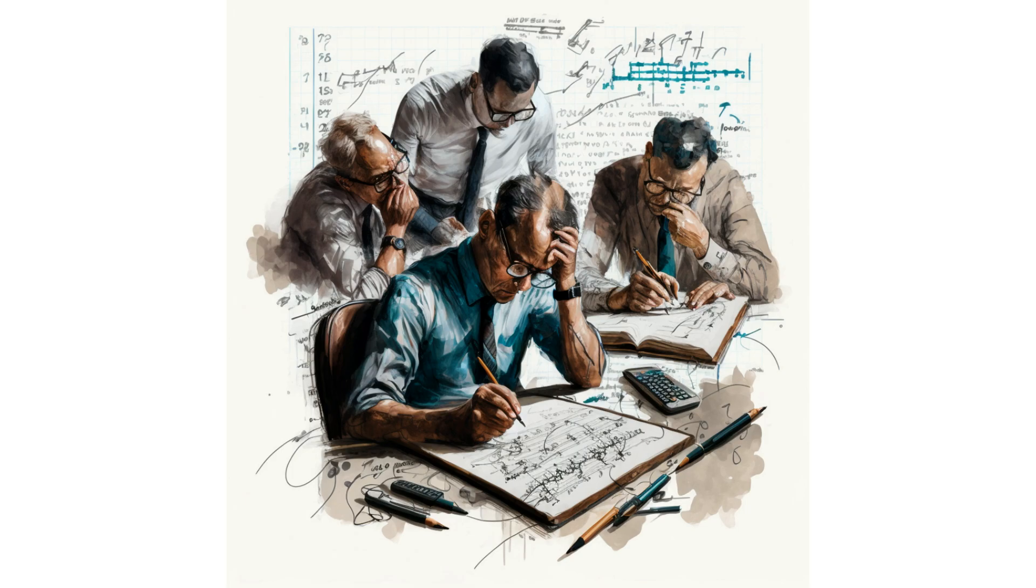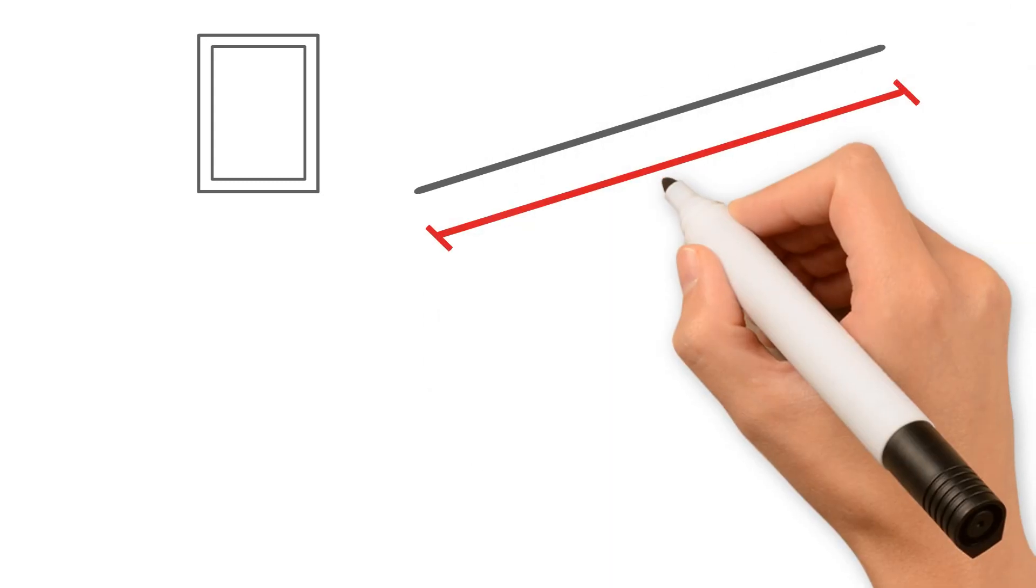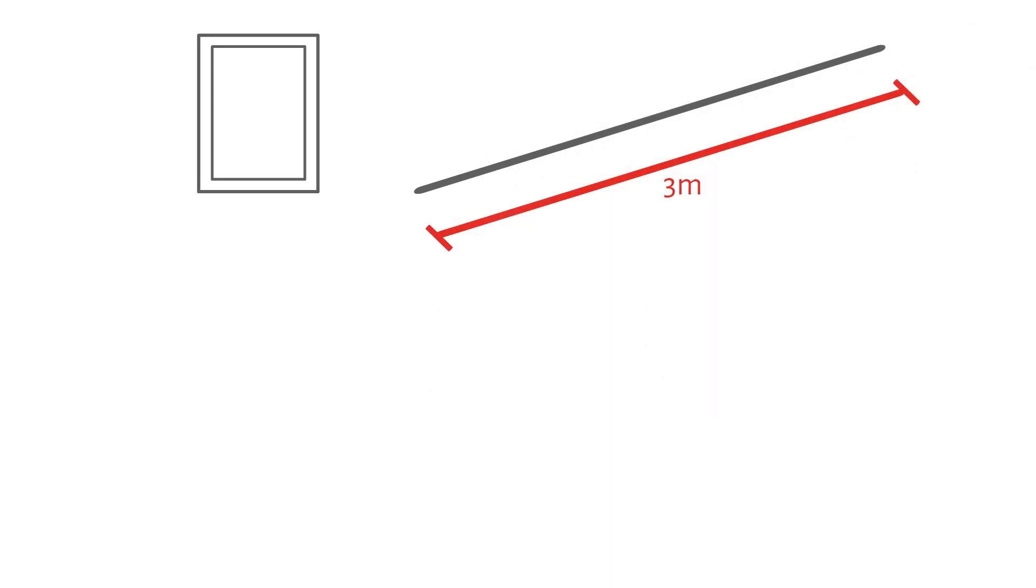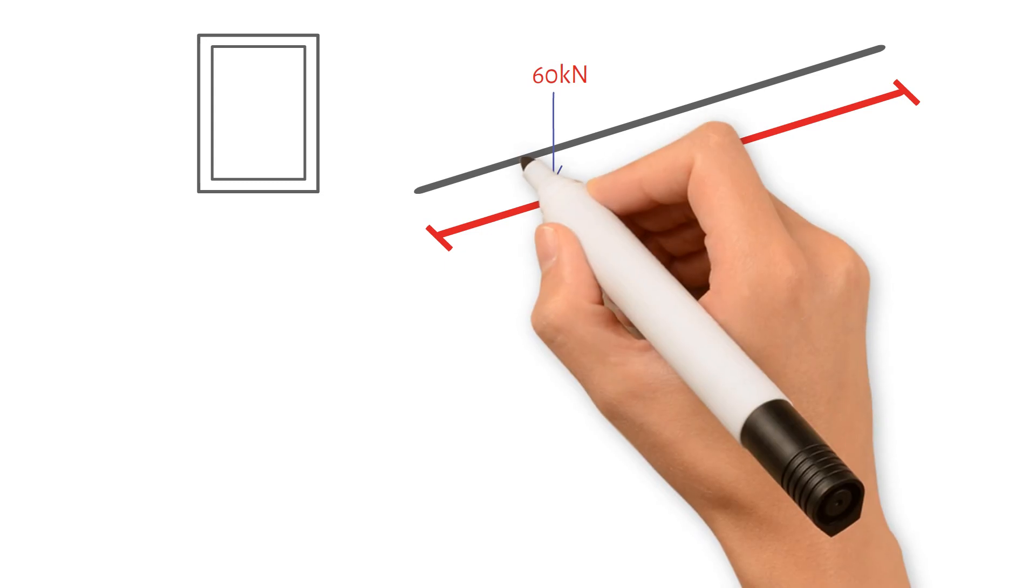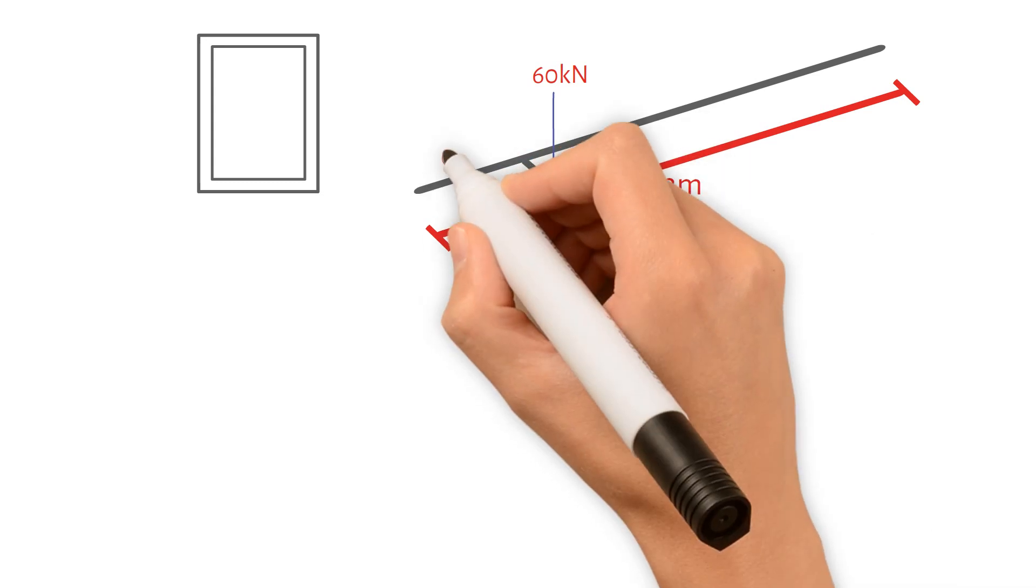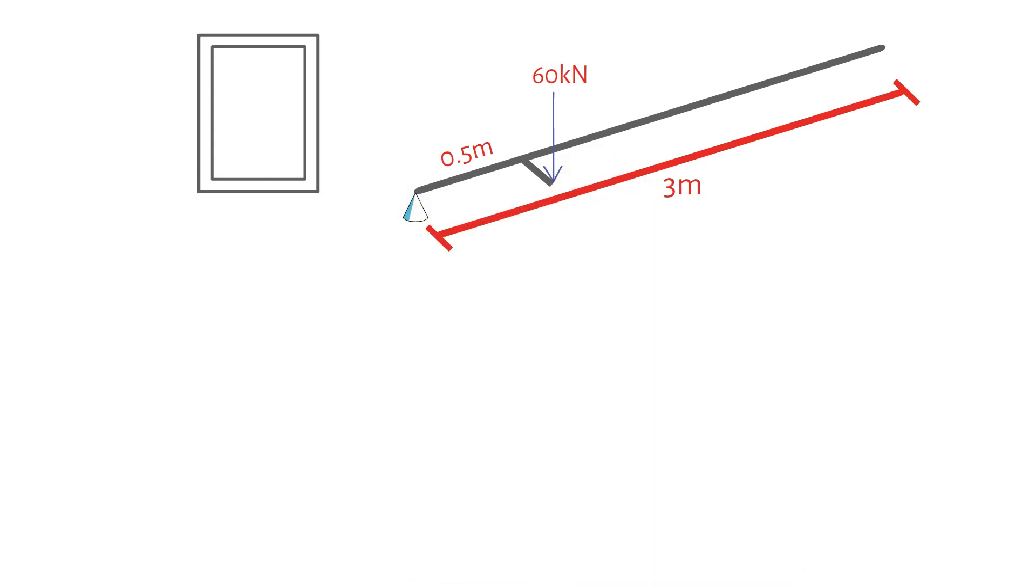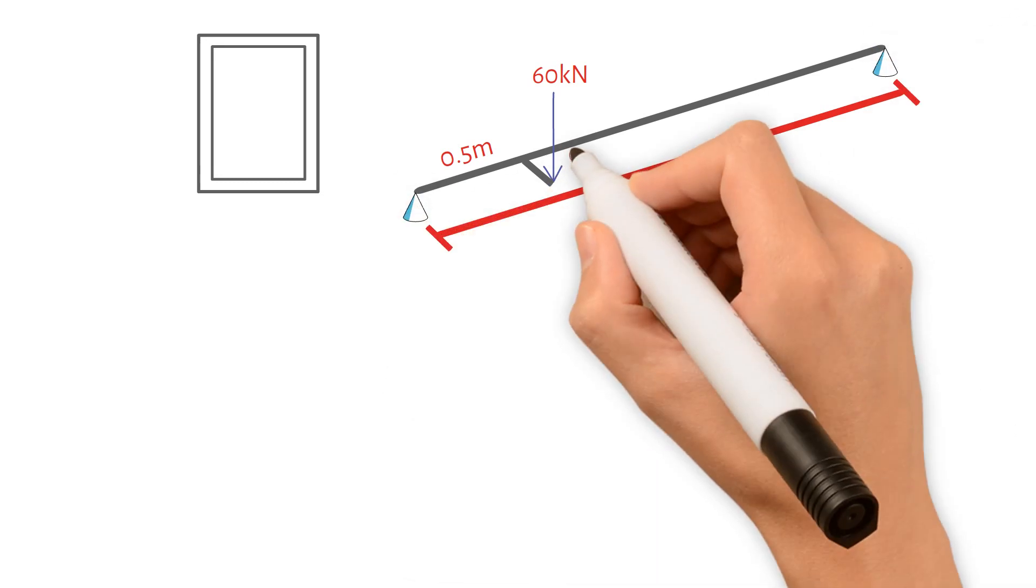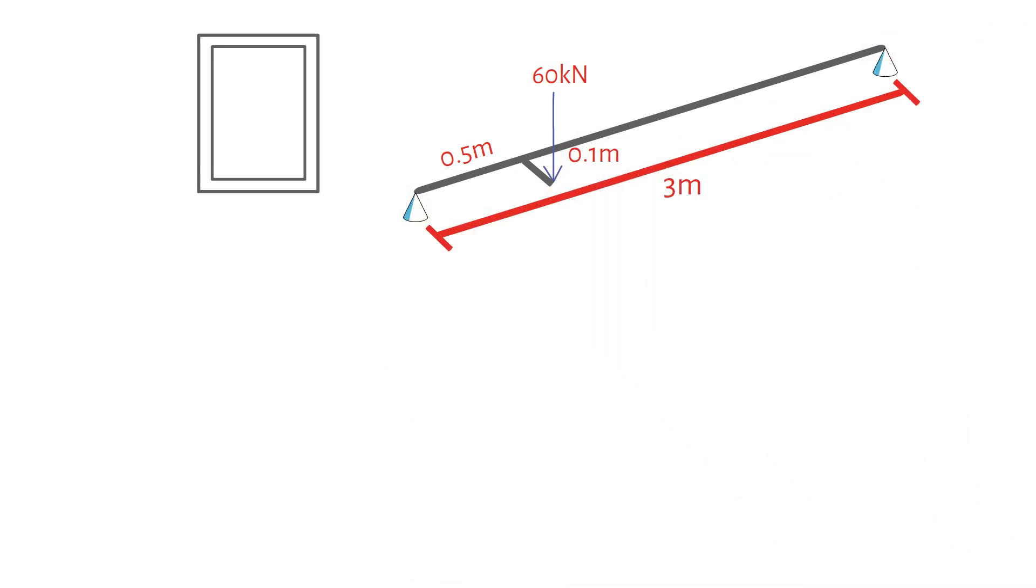Welcome to this video on determining the size of a suitable square hollow section for a 3m long beam that supports a design load of 60 kN. The load acts through a short cantilever that is 0.5m from one end and has an eccentricity of 0.1m from the centre line of the beam.